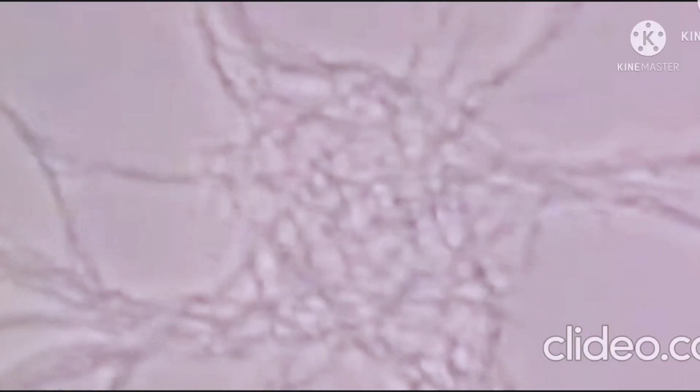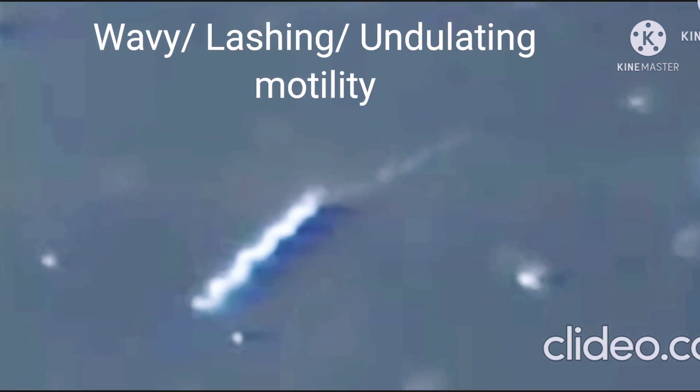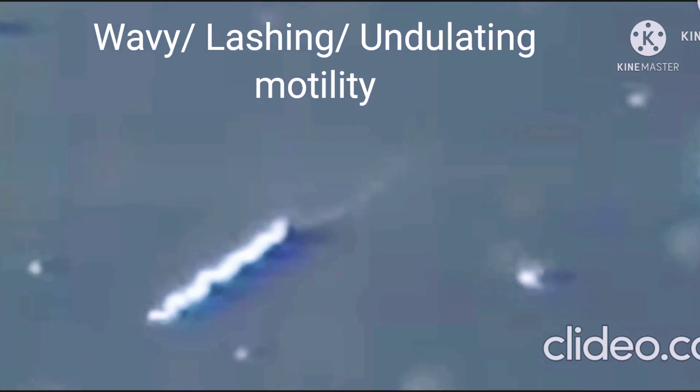Next is the motility shown by Borrelia — here the flagella is straight inside the bacteria, so its movement produces a wavy pattern called lashing motility or undulating motility. Just look carefully and you will see this organism showing a wavy pattern of movement.